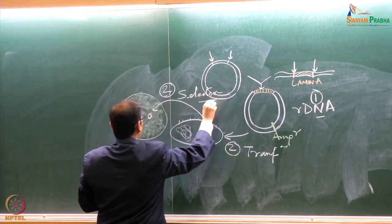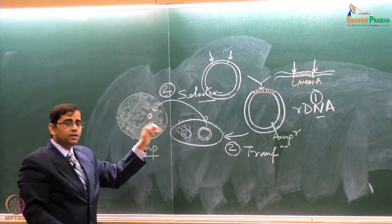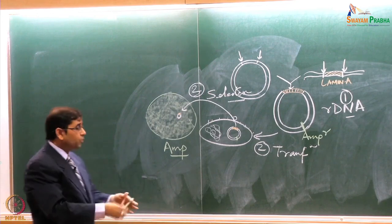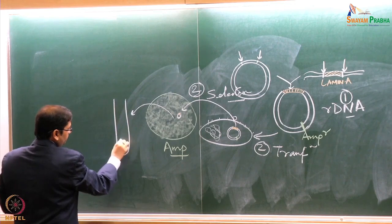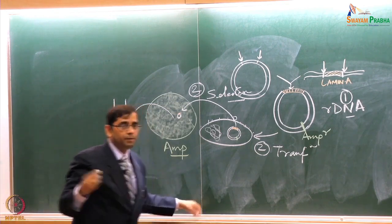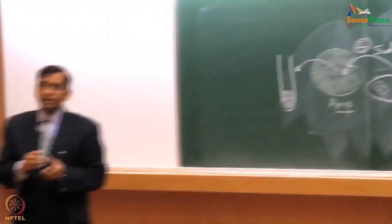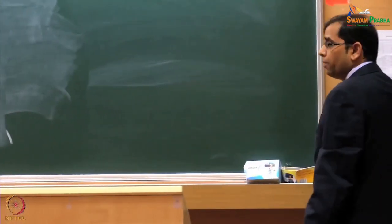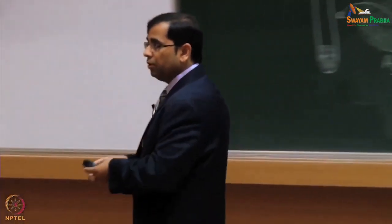Only bacteria containing the plasmid will survive on the ampicillin plate and form colonies — this is the selection step. So the three steps are: first, making the recombinant DNA molecule; second, transformation into bacteria; and third, selection. Once you have selected the correct clone containing your gene of interest, you can grow the bacteria rapidly to produce multiple DNA copies or use the system to produce the target protein as well.